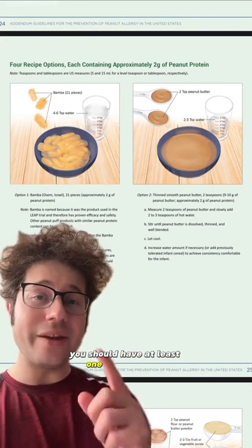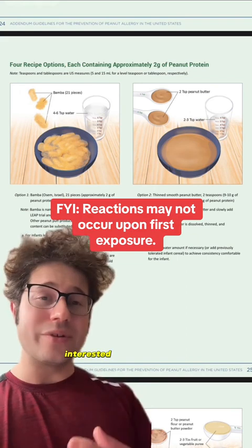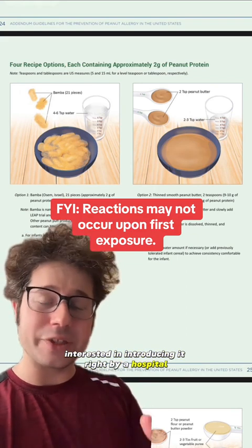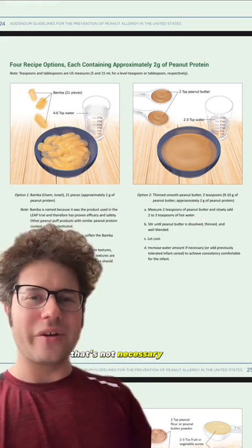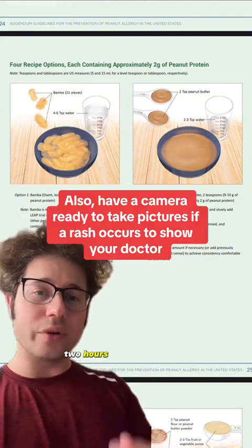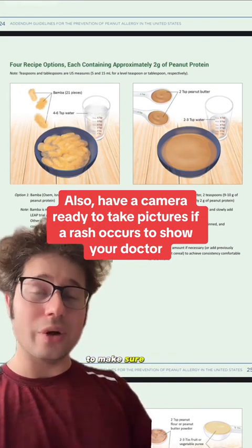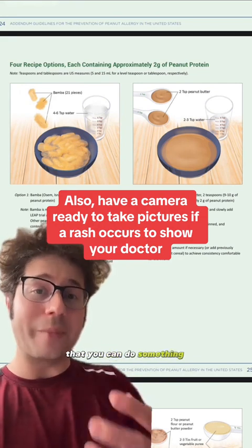You should have at least one adult present, ideally at home. I know a lot of people are interested in introducing it right by a hospital. That's not necessary for most people, but I can understand why people would do that. And you want to make sure that you have at least two hours of uninterrupted time where there's adult supervision present to make sure that if there's a reaction that you can do something about it.